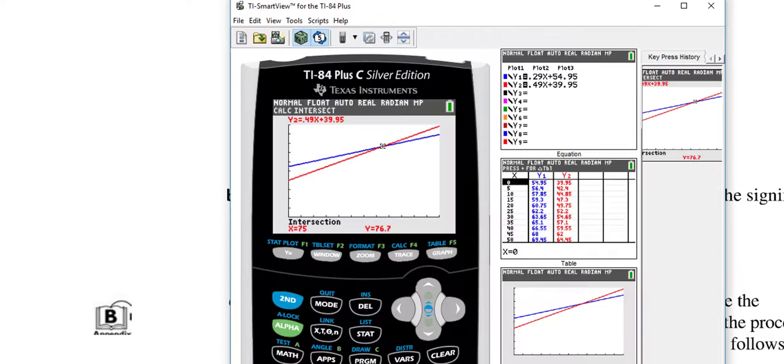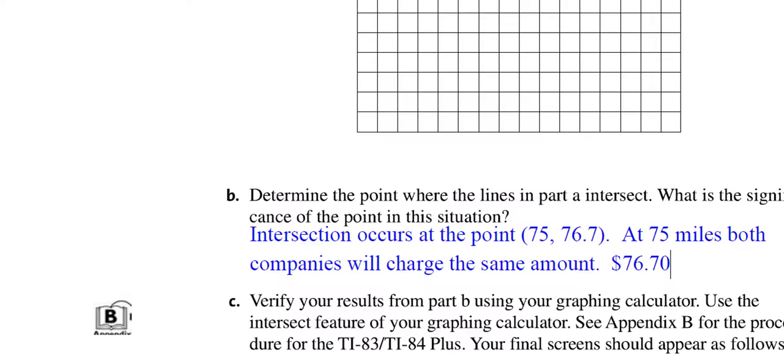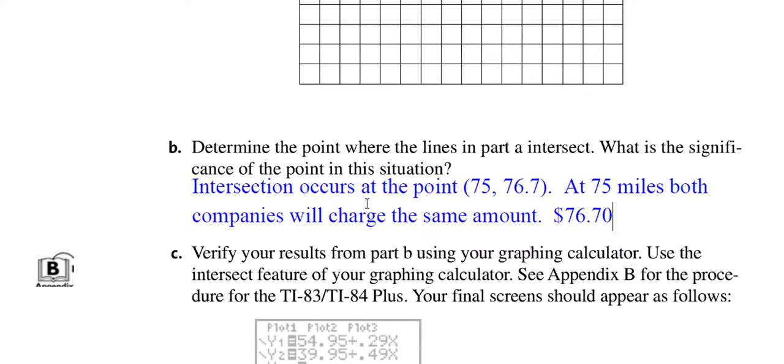So just think about interpreting what we've just seen. If you travel 75 miles, the cost of Company 1 and Company 2 will be $76.70. By the way, on a test, if you were to provide this as an answer, I would actually want you to just do a rough sketch and label the intersection. So I filled in our answer here.